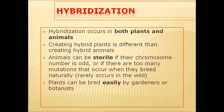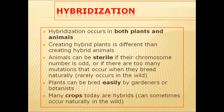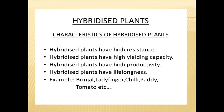Plant breeding is very easy and can be done by gardeners and botanists. Many crops today are hybrid plants, and sometimes they occur naturally in the wild. Hybrid plants have high resistance to diseases, high yield, and high productivity. Examples of hybrid plants include brinjal, lady's finger, chili, paddy, and tomato.